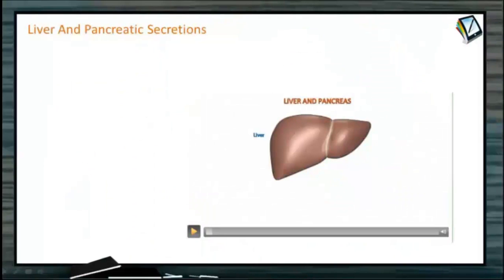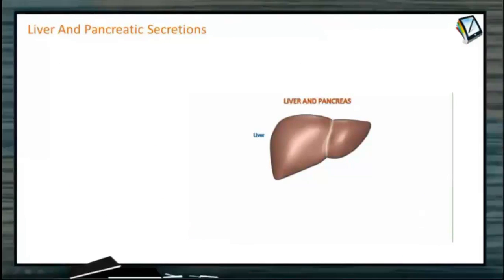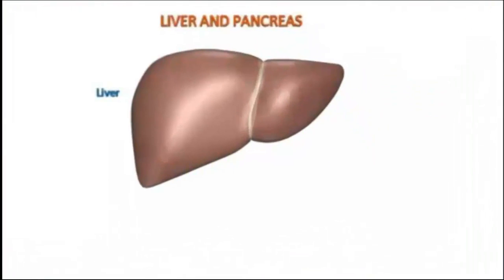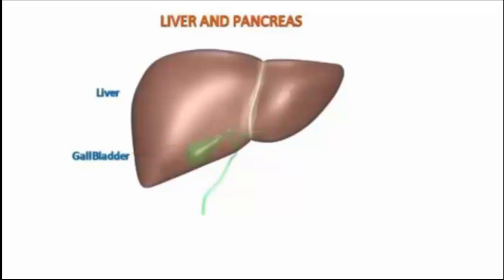The liver is the largest gland in our body, present towards the right side in the abdominal cavity. It is suspended from the diaphragm by a falciform ligament, and there is a round ligament from its inner border. The two lobes are separated with the help of right and left coronary ligaments. The gallbladder is about 7 to 10 cm long, present on the anterior and right side of the liver lobes.